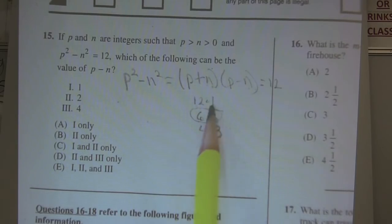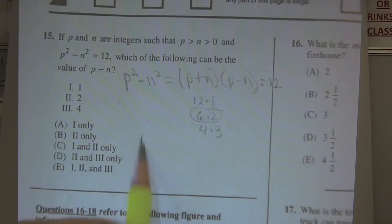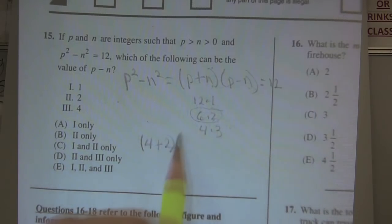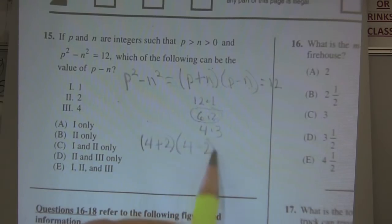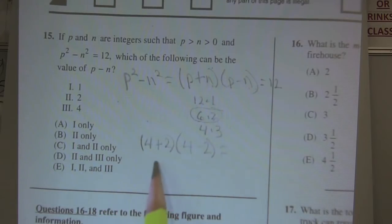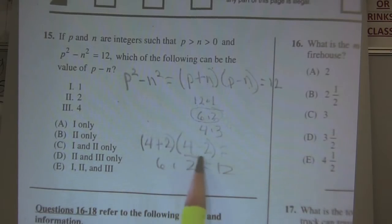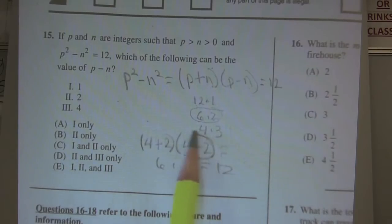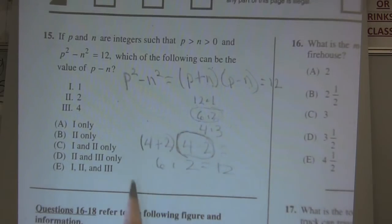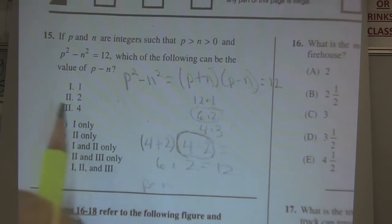I'm going to use this pair right here because 6 is the same as 4 plus 2, and 2 is the same as 4 minus 2. That's going to get me 6 times 2, which is going to get me 12. So check this out. Here's the question: what is p minus n? P minus n is 2. So I know it's that one right there.